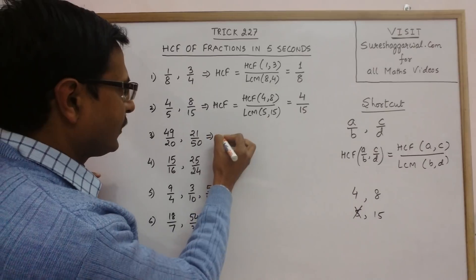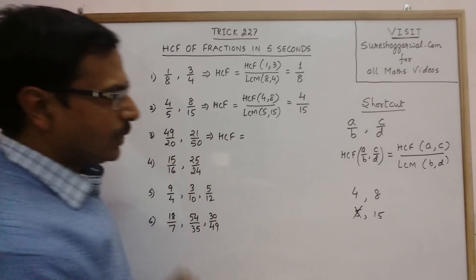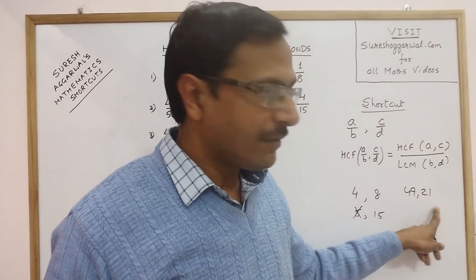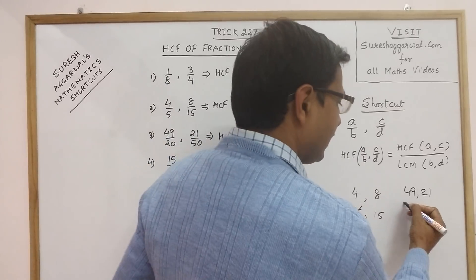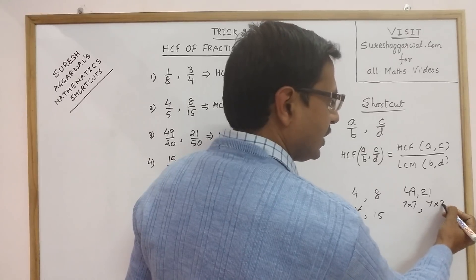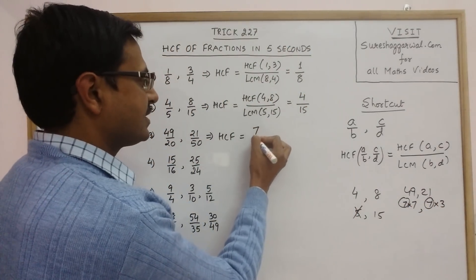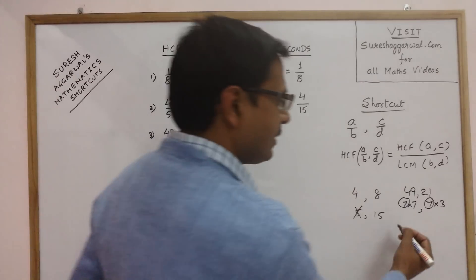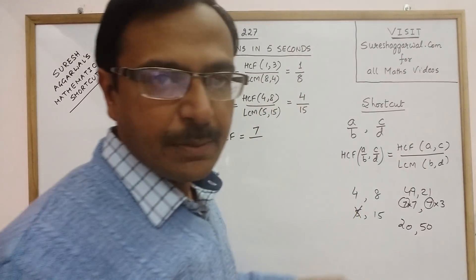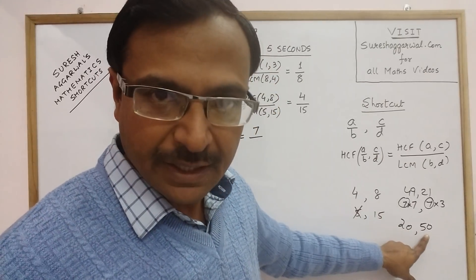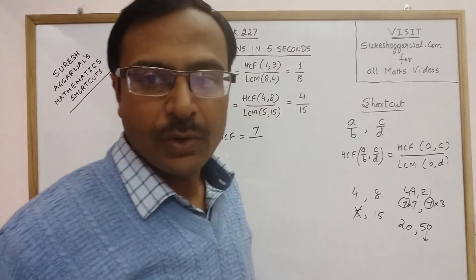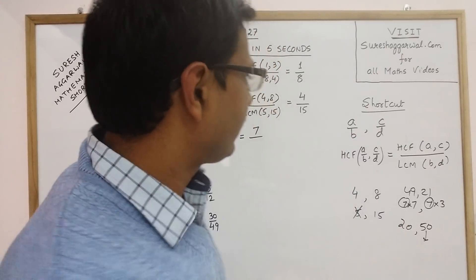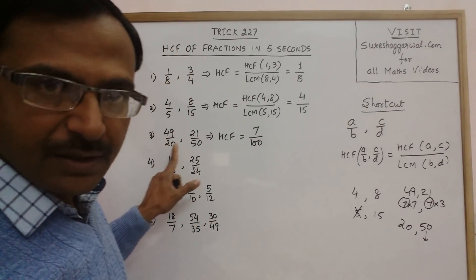Now apply this here. The HCF is for numerators 49 and 21. Both are in the table of 7 — 7×7 and 7×3 — so 7 is the only common factor. The highest common factor of the numerators is 7. For the denominators 20 and 50: 20 does not divide 50 exactly, so take multiples of 50. The next multiple is 100, and 20 divides 100 exactly, so the LCM of 20 and 50 is 100.